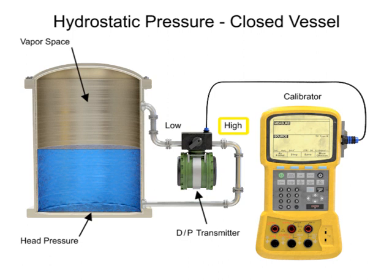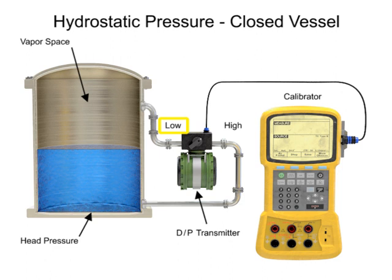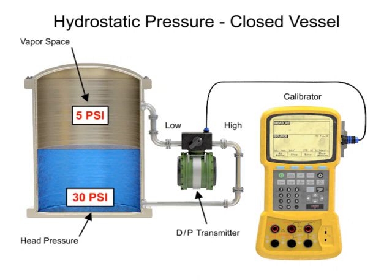This device has a high-pressure side input and a low-pressure side input. The high-pressure input is connected to the bottom of the tank to measure hydrostatic pressure. The low-pressure input of the differential pressure transducer is connected to the vapor space pressure. The transducer subtracts the vapor pressure from the high pressure, resulting in a value that represents the hydrostatic head proportional to the liquid level.